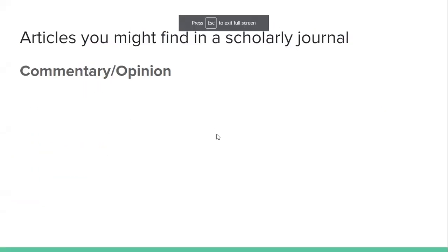It's important to realize that not everything published in an academic journal is actually primary research. Some of the types of articles you'll find in a scholarly journal include commentary, opinion pieces, or editorials — these are someone's opinion on a topic or the field, but are not primary research.